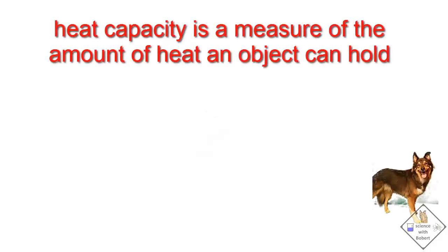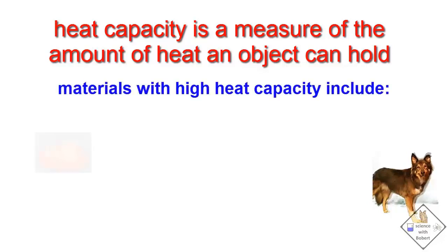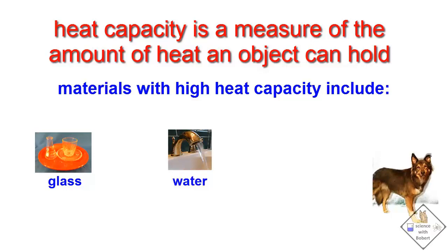What is heat capacity? Heat capacity is a measure of how much heat a material can hold. Glass, water, and plastics are examples of materials that have a very high heat capacity.